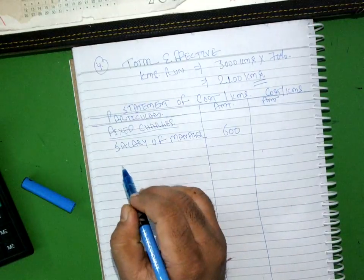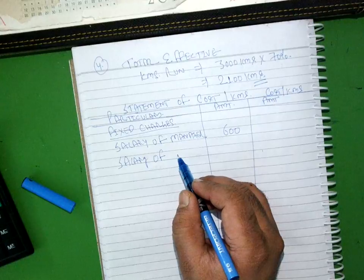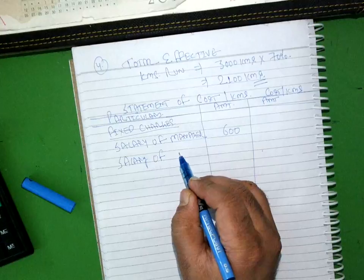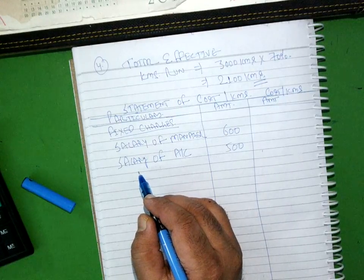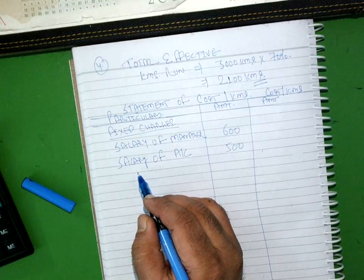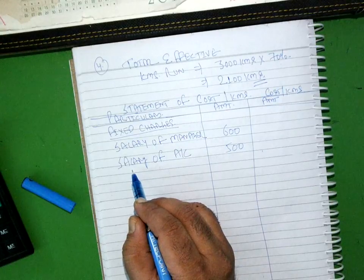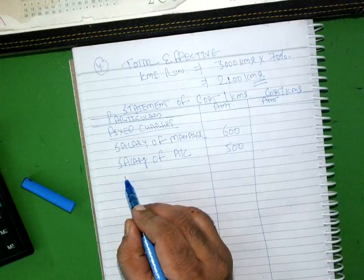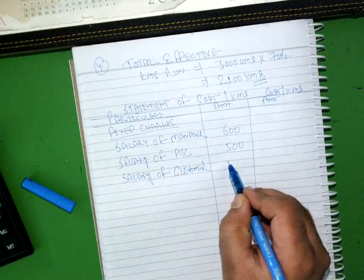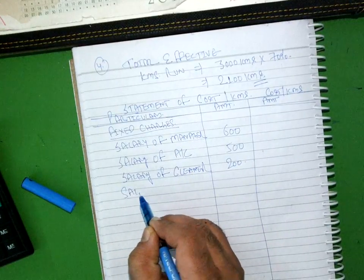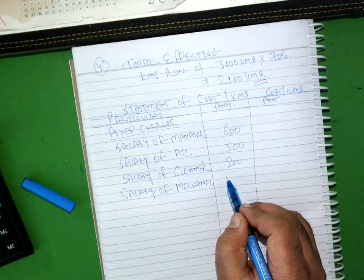Salary of manager you have got 600, and salary. But if the question says find out on quarterly basis, then even if you don't want to, everything you have to convert it to quarter. Salary of accountant: 500. Salary of cleaner: 200. Salary of mechanic: 400.